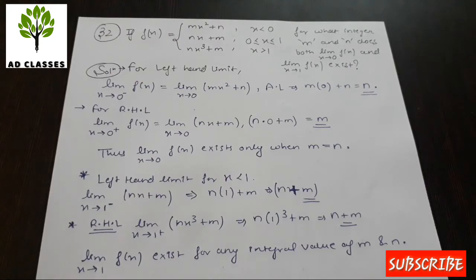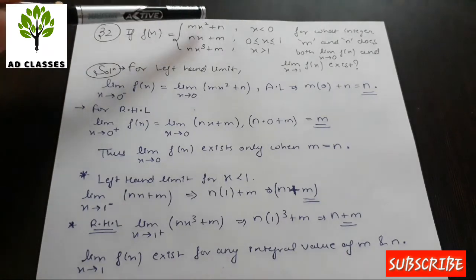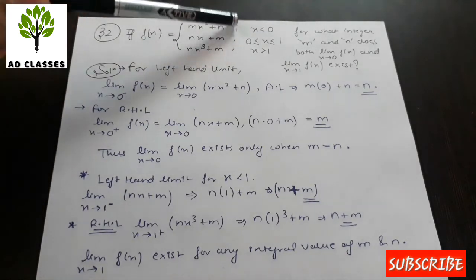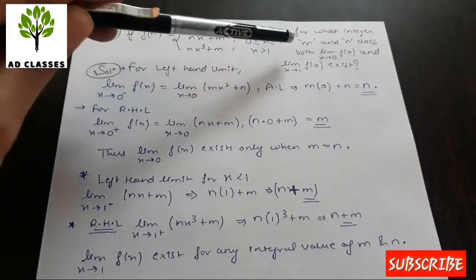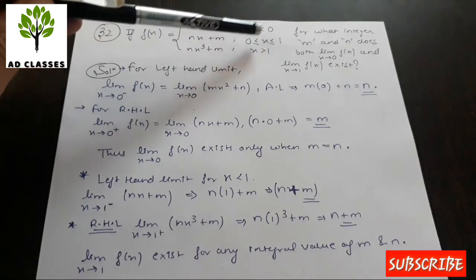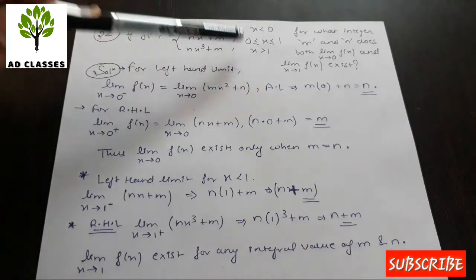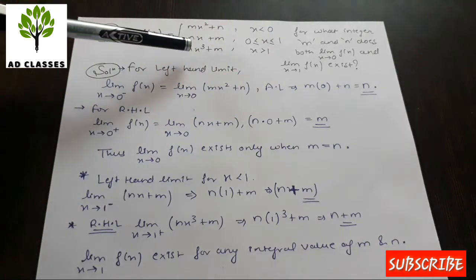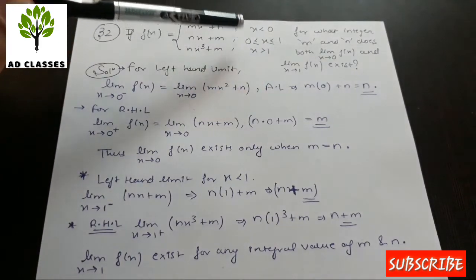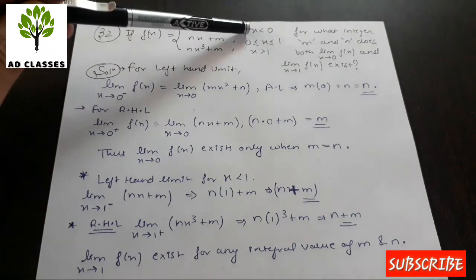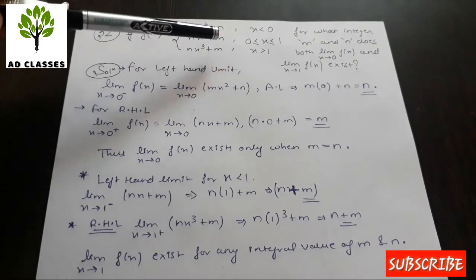Question 32: a piecewise function is defined with three pieces — one for x < 0, one for 0 ≤ x ≤ 1, and one for x > 1, involving parameters m and n. The function has two breaking points at x = 0 and x = 1. We will find LHL and RHL at both x = 0 and x = 1.